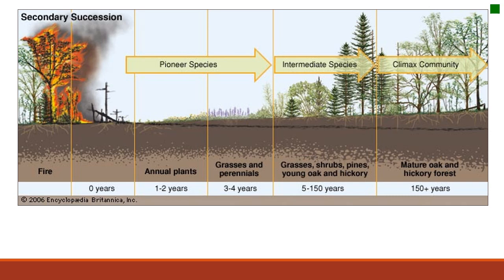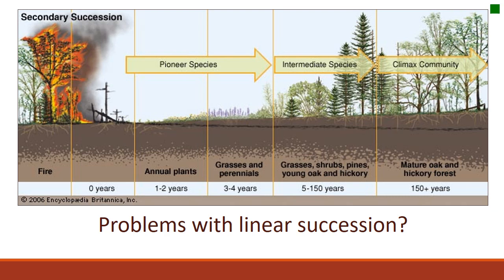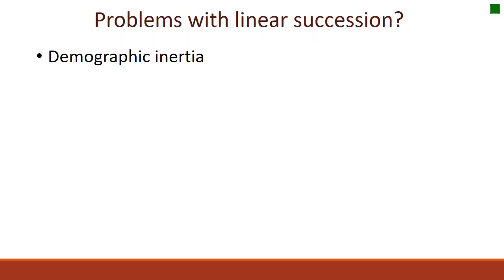From the previous lecture you started to understand what succession is. Whether it's primary or secondary succession, we see changes in plant communities over time. When we think about rangelands and other ecosystems, sometimes there are problems with linear succession and we don't see these patterns occur. There are a lot of different reasons and we're going to talk about some of them today.